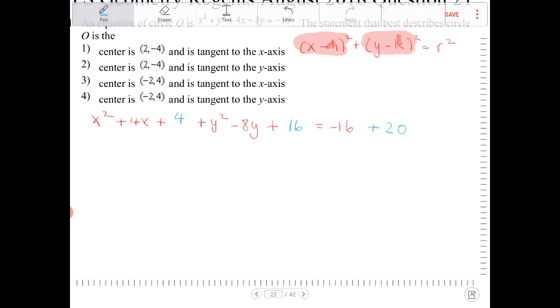So now that I have this, the two pairs of trinomials, the one involving x, that will transform or factor into x plus 2 squared. And the trinomial involving y's will factor into y minus 4 squared, equal to 4.